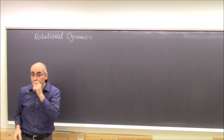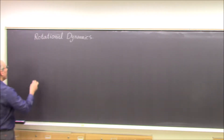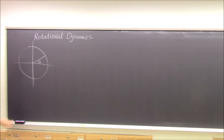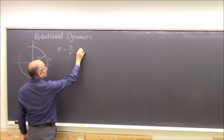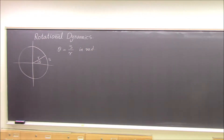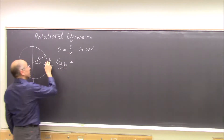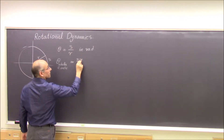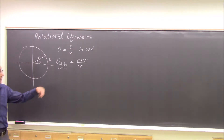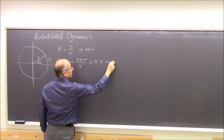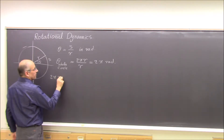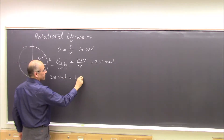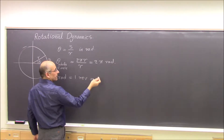To talk about rotational dynamics, let's review what we have for rotation. We start with the definition of the angle theta. If you have a point on a circle, the angle theta, radius r, and the arc length s, then theta is defined as s divided by r. It is in radians. Theta for the whole circle is the whole circumference 2πr divided by r, which gives 2π radians. That's why we say a full circle is 2π radians, and we also call 2π radians one revolution.